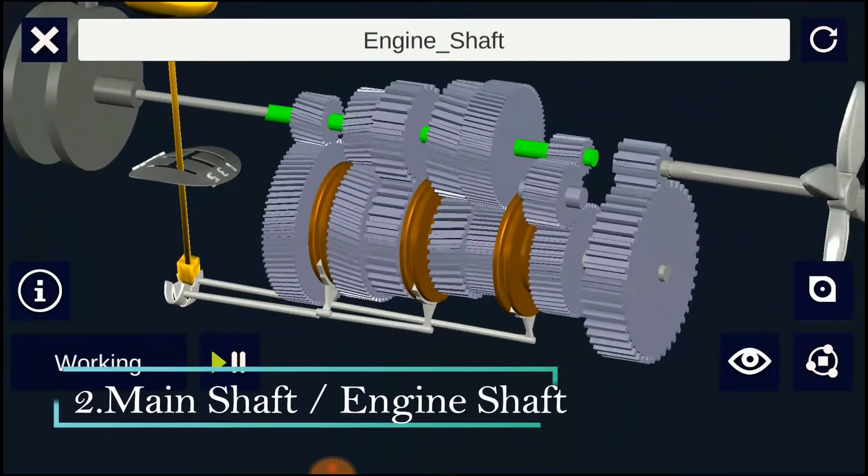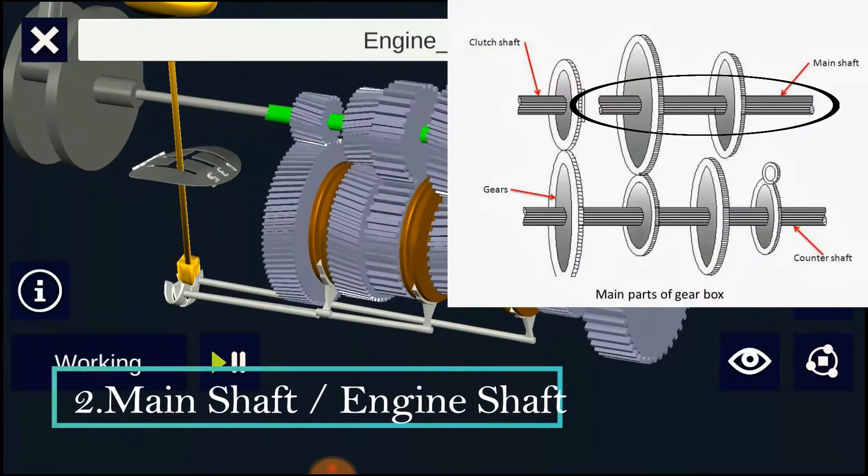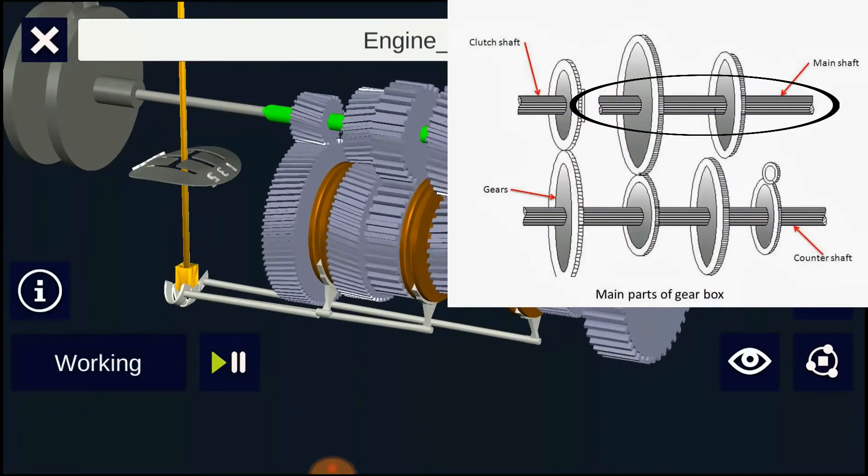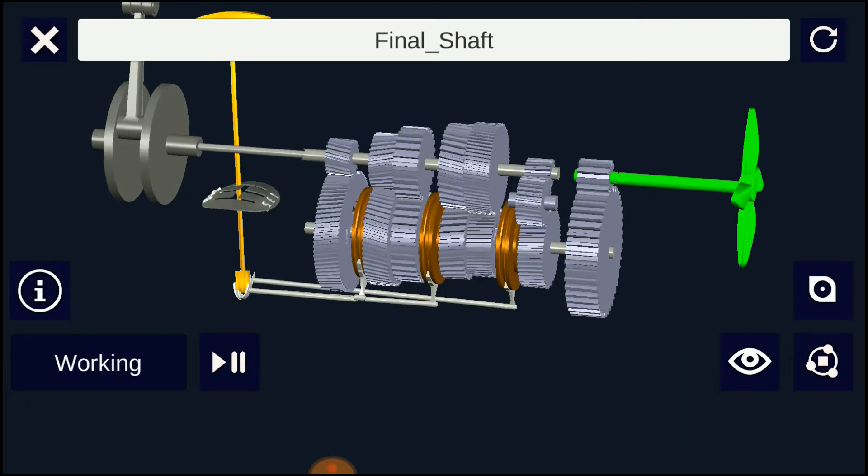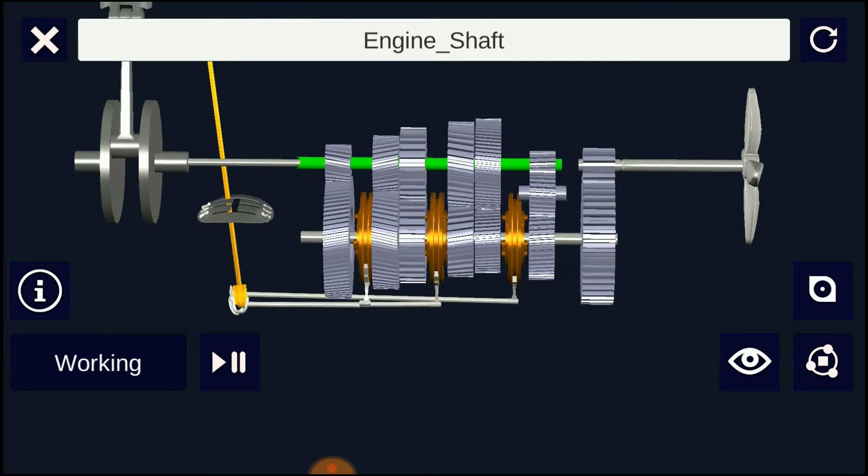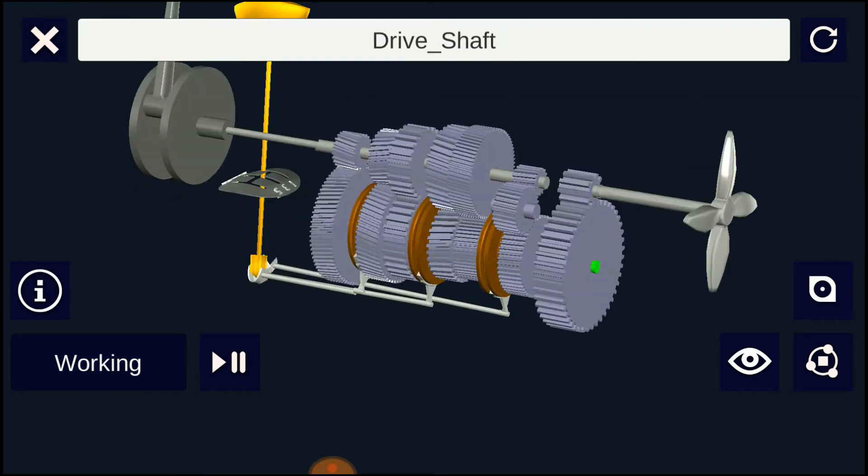Next is the main shaft. It is the shaft which runs at the vehicle speed. It carries power from the counter shaft by use of gears, and according to the gear ratio it runs at different speed and torque compared to counter shaft. One end of this shaft connects with the universal shaft.